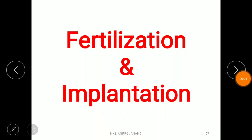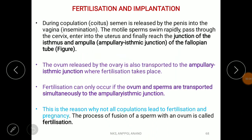In this lecture we discuss fertilization and implantation in humans. During copulation, semen is released into the vagina — a process called insemination — and from there the motile sperm move towards the uterus and then the fallopian tube.